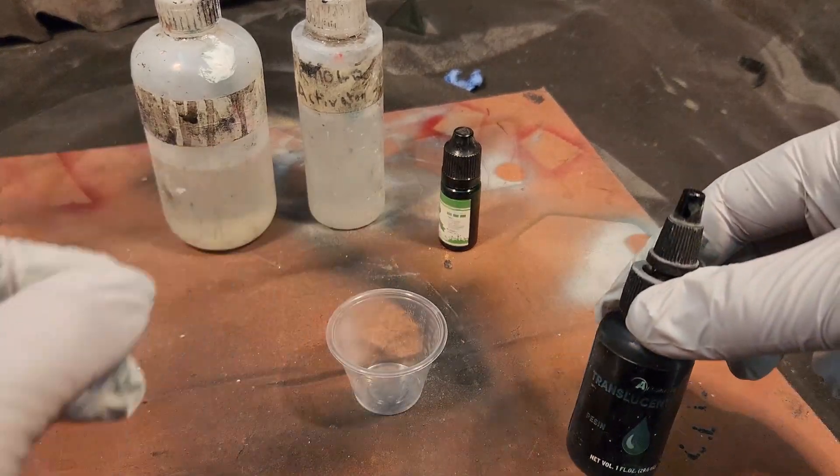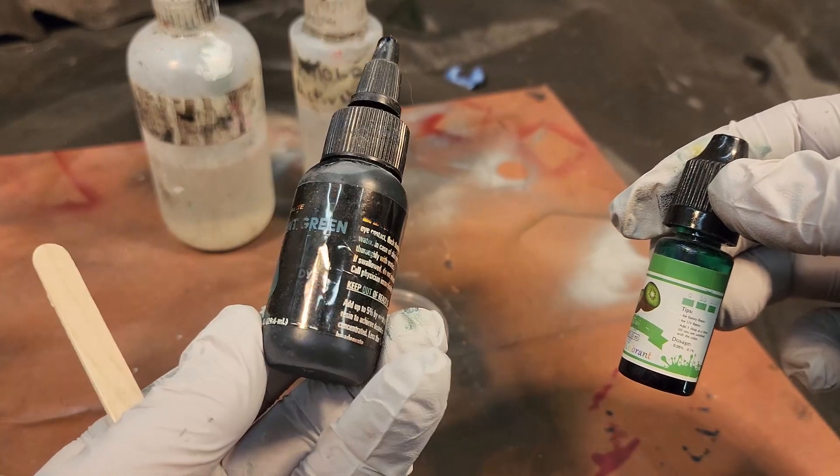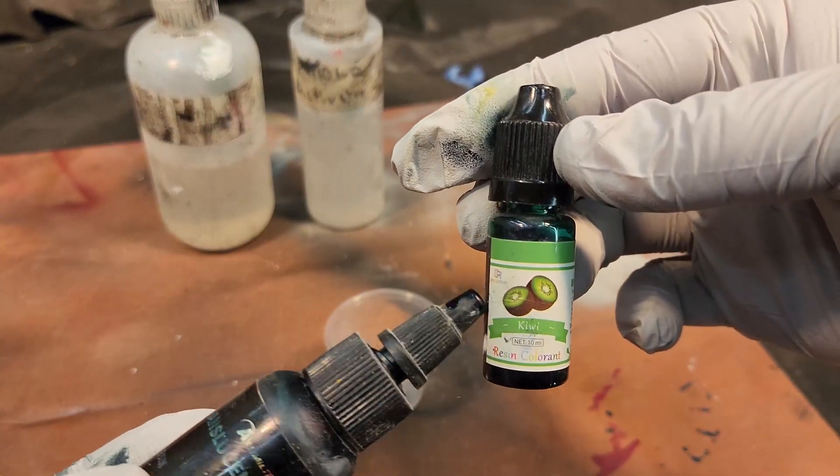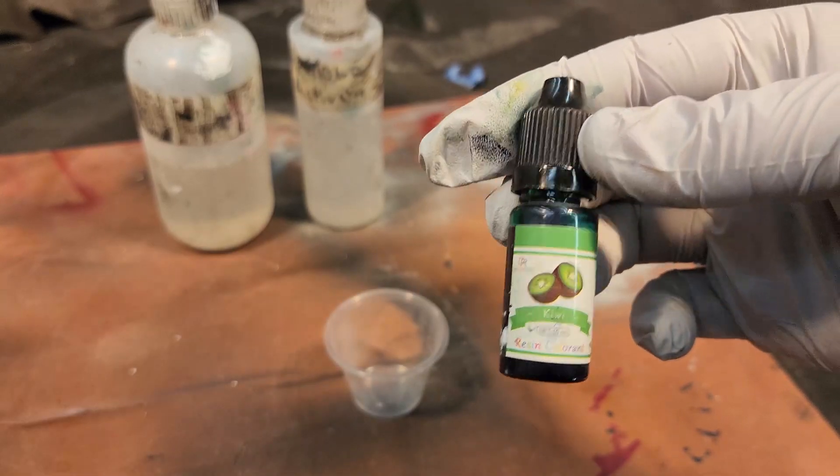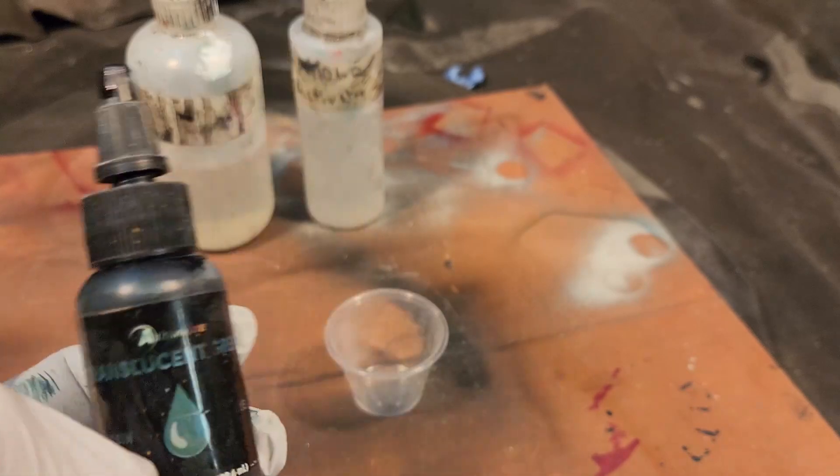And then I've got a couple of resin dyes. So this is Alumilite's translucent green, which is what I'm going to use for this, but you can buy some cheaper ones as well. This came with a kit of 20 different colors. These aren't as concentrated, so I really like the Alumilite.